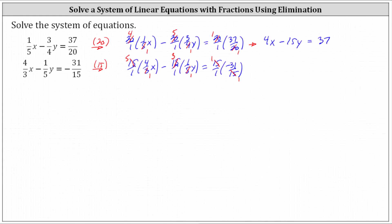And now we multiply. For the first product, we have 5 times 4x, which is 20x. And we have minus 3 times 1y, or 3y. Equals 1 times negative 31, which is negative 31.